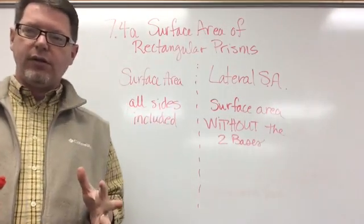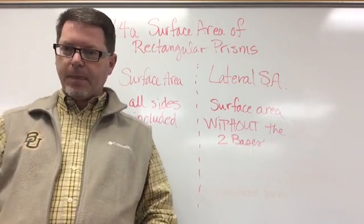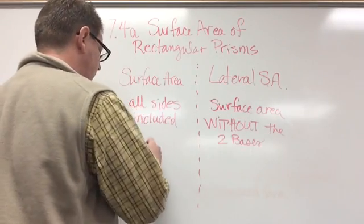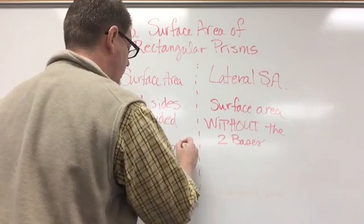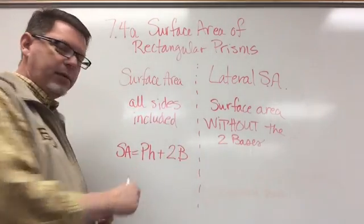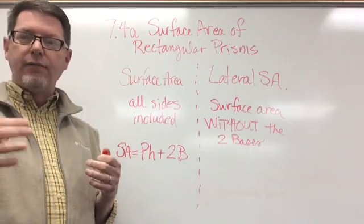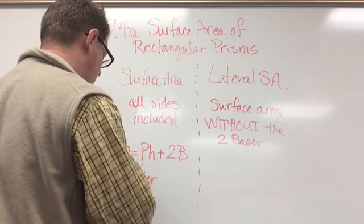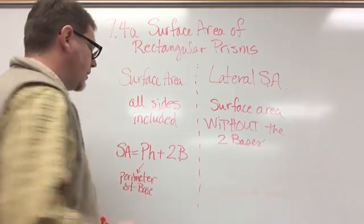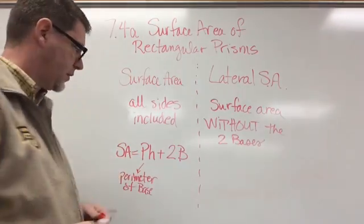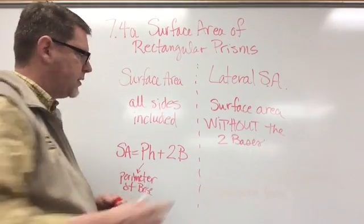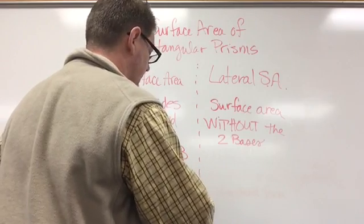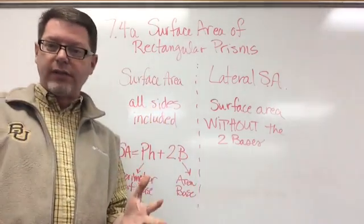Now there are formulas we're going to use to find the surface area and the lateral surface area. The surface area formula for rectangular prisms is SA equals capital P times H plus 2B. Capital P stands for the perimeter of the base. H is the height of the prism. And capital B is the area of the base — you've known that one for a long time.